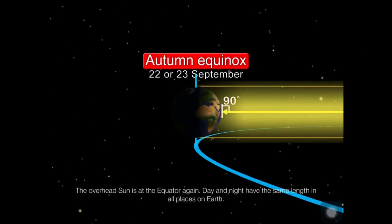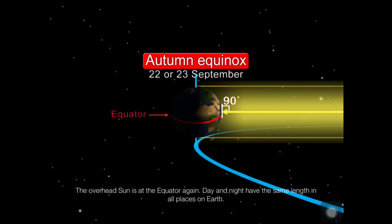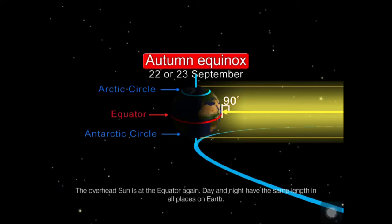The overhead Sun is once again at the equator. Day and night have the same length at all places on the Earth.